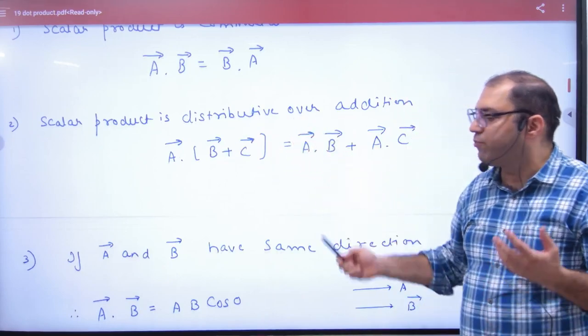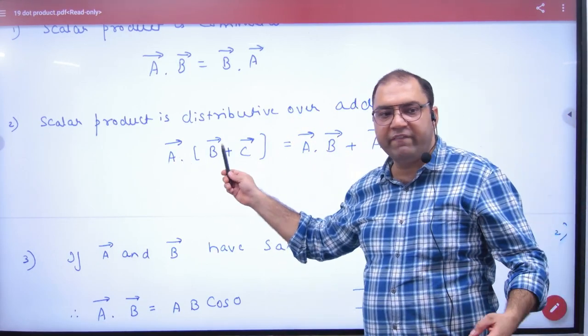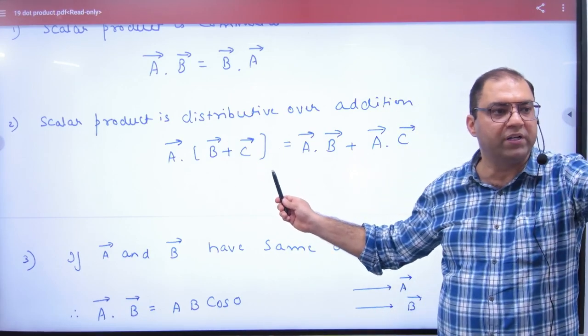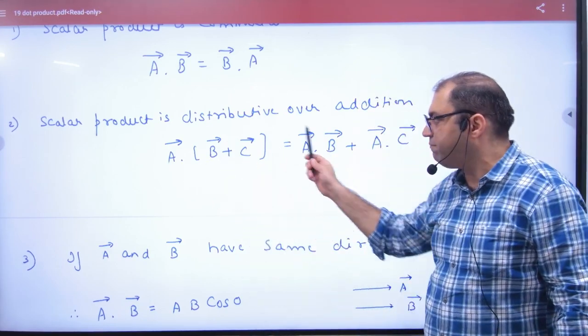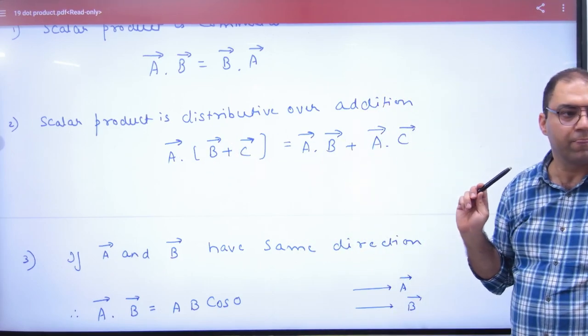Next is, scalar product is distributive. The property is A vector dot (B vector plus C vector). To open the bracket is allowed. How? A vector dot B vector plus A vector dot C vector. Second property is clear.